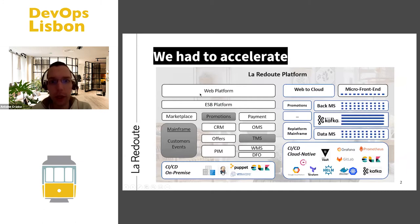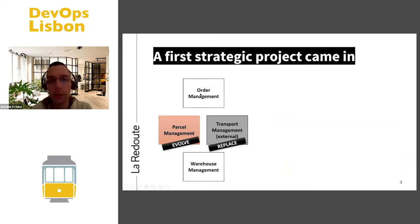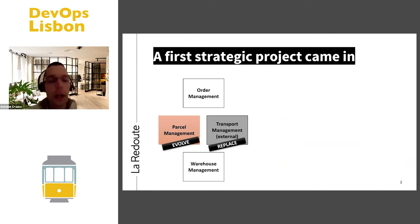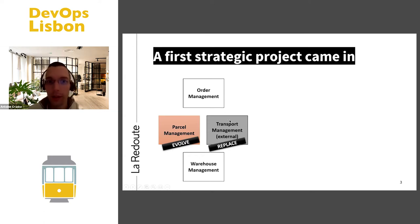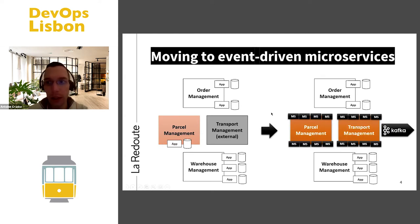The case I will share today is that when we started moving to that right part, we started to do some big transformation projects on the IT system. We had to completely redo a parcel management system and replace the transport management piece. As we are a retail company, it's a really critical piece in our system, and we decided to address those two projects as a build in terms of IT strategy.